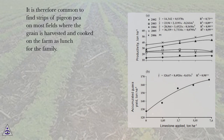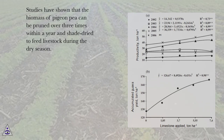It is therefore common to find strips of pigeon pea on most fields where the grain is harvested and cooked on the farm as lunch for the family. Studies have shown that the biomass of pigeon pea can be pruned over three times within a year and shade-dried to feed livestock during the dry season. Among the three pruning heights of pigeon pea — at 30, 60 and 90 centimeters — it was found that pruning at 90 centimeters height for livestock still allows the pigeon pea to produce seed at the end of the year.